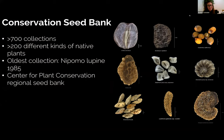Our collection is made up of more than 700 different accessions representing more than 200 different kinds of native plants — mostly rare plants. Our oldest collection is Napoma Lupin from 1985. We are a Center for Plant Conservation regional seed bank, meaning we've been approved and accredited by the Center for Plant Conservation as a seed bank that adheres to international and national standards, and we can receive seeds from people throughout California and store them. I have these seed images here to give you a tiny glimpse into the amazing diversity of seed morphology — seeds are as beautiful as the plants they come from, very diverse in shape, size, and texture.